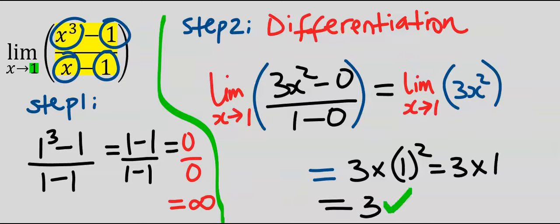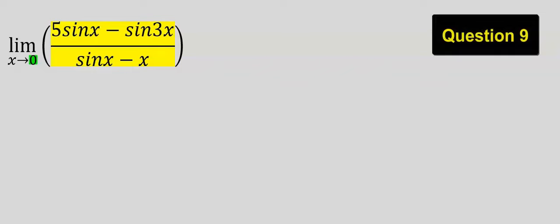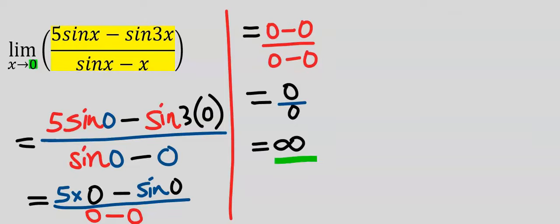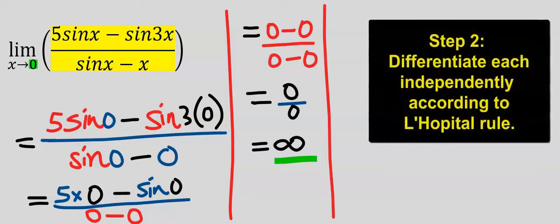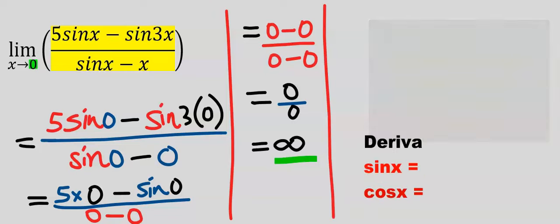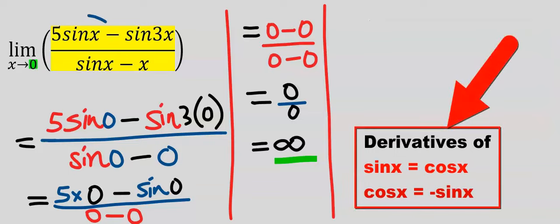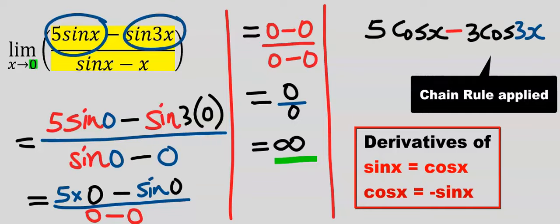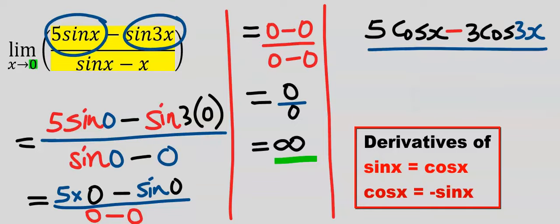Let's consider this question. Step 1: direct substitution gives undefined. Step 2: apply L'Hôpital's rule — the only method that works here is direct differentiation. Differentiating 5 sin x gives 5 cos x. Differentiating sin 3x gives 3 cos 3x. Differentiating sin x gives cos x, which equals 1.